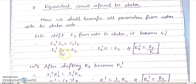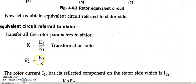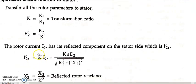Cross-multiplying: I1/I2 equals E2/E2 dash, and we know that I1/I2 equals K, the transformer ratio. So E2 dash times K equals E2, giving E2 dash equals E2/K. This is how E2 dash comes into the picture, and this is what is directly written: E2 dash equals E2/K.